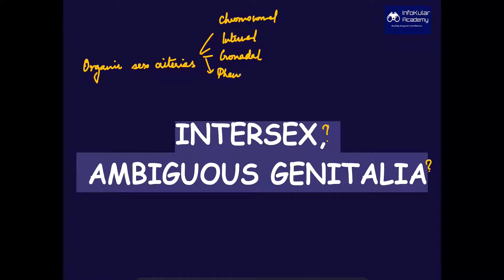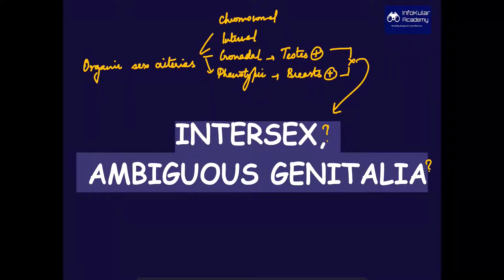For example, let's say a person has presence of testes internally but shows well-formed breasts externally. This ambiguity or discordance is called intersex.